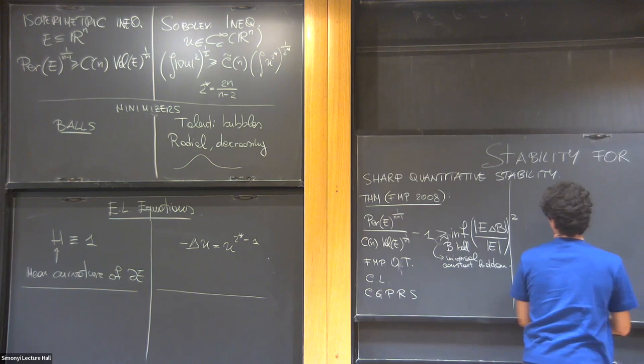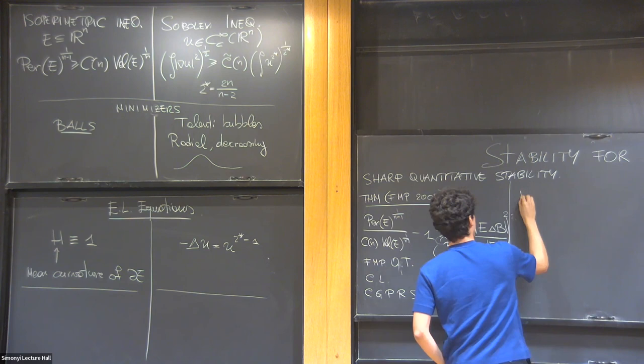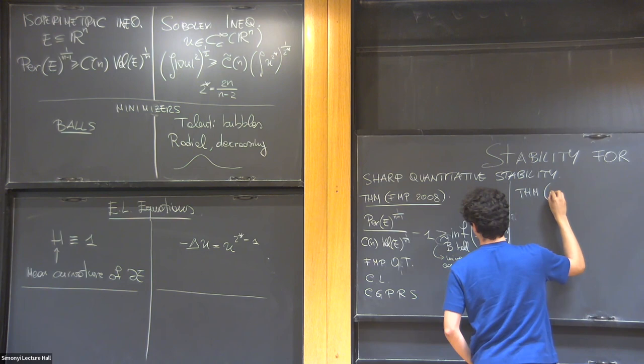And if I have time at the very end, it's online. I'd like to show it. But first, what's the situation on the other end for the Sobolev inequality? We have this theorem, which is comparably easier with respect to the isoperimetric inequality. This is the Bianchi-Egnell, 91.